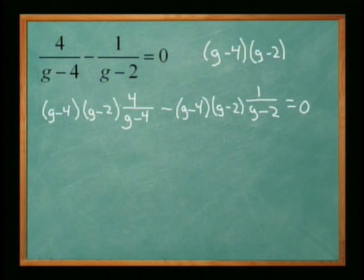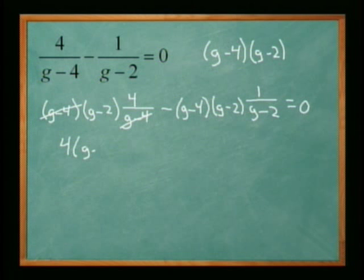Remember our goal was to get rid of the fractions. Look here, in the first case the g minus four is going to cancel out, leaving us with four times g minus two. Over here the g minus two is going to cancel out, leaving us with g minus four.